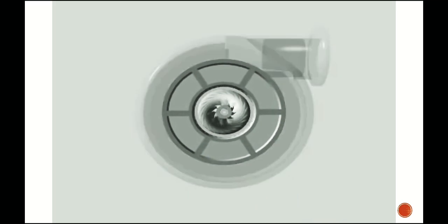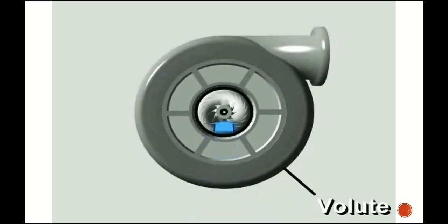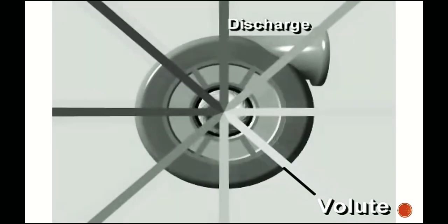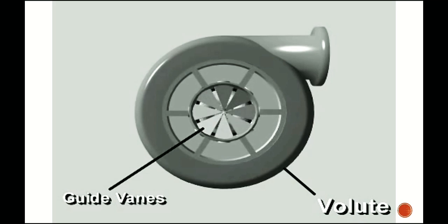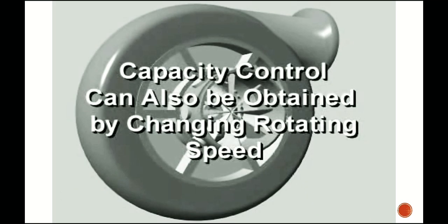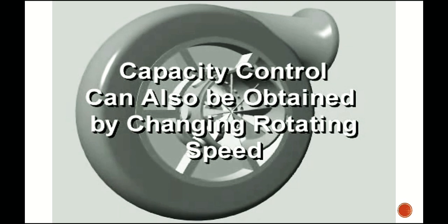The volute-shaped casing collects the slow-moving, high-pressure vapor from around the diffuser and conveys it to the discharge connection of the compressor. Inlet guide vanes control the centrifugal compressor's capacity. These movable vanes are located in the suction opening. With vanes fully open, the compressor produces its full cooling capacity. As the vanes are closed, they reduce refrigerant flow through the compressor, reducing the capacity of the refrigeration cycle. Capacity control can also be obtained by changing the rotating speed.